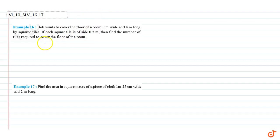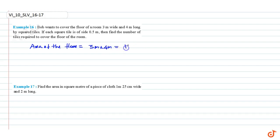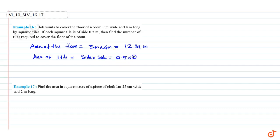First, we will calculate the area of the floor of the room. Area of the floor equals 3 meters into 4 meters, equal to 12 square meters. Area of one tile equals side into side, equal to 0.5 into 0.5, equal to 0.25 square meters.